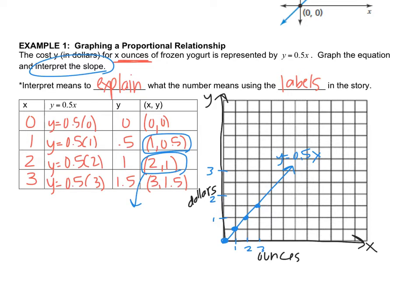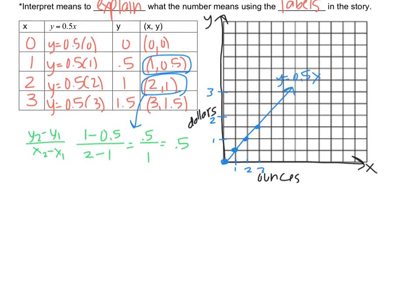Remember the formula is y2 minus y1 over x2 minus x1. I'm going to plug in 1 minus 0.5 over 2 minus 1. It gives me 0.5 over 1, which is just 0.5. But actually the fraction is a little more helpful for me to use the labels, so I'm actually going to leave the fraction as my slope.